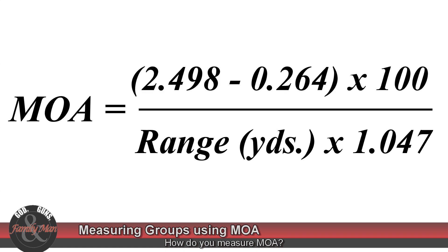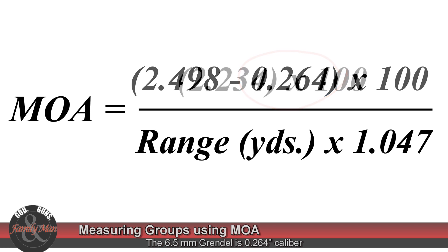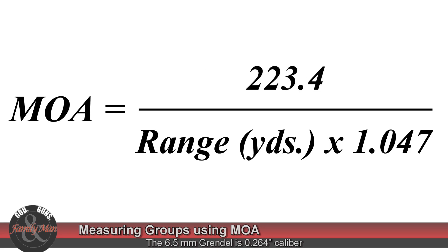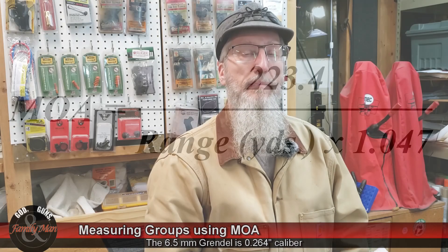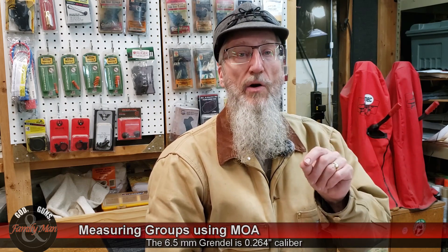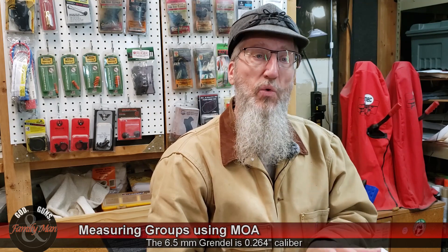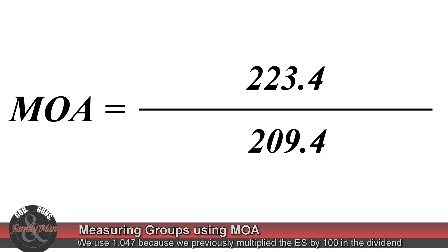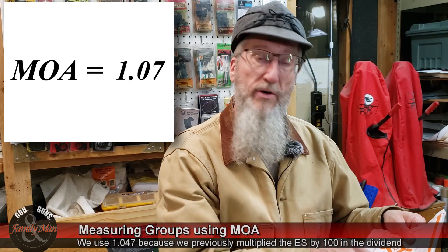I'm going to multiply that measurement by the value of one hundred. Now note: to calculate true extreme spread, we have to subtract the size of the bullet — the caliber of the bullet — from the measured edge-to-edge extreme spread. Then we divide that value by the range in yards to the target. This was a two hundred yard range, so I take two hundred, multiply it by the MOA equivalent at one hundred yards, 1.047. And that is the MOA for this particular group.